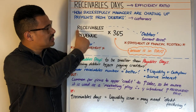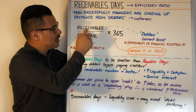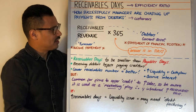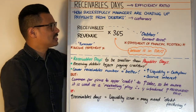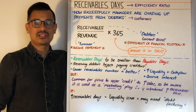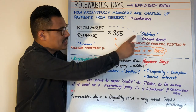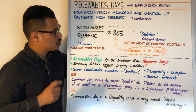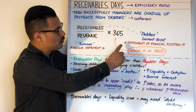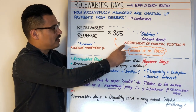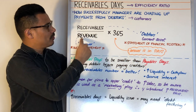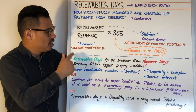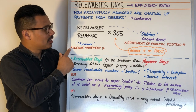The formula for receivables days is: receivables divided by revenue, times 365 — because the answer is in days. The top half, receivables, is essentially the same as debtors, which is a type of current asset found in the statement of financial position. The bottom of the formula is revenue, or sales revenue or turnover, which you'll find at the very top of the income statement.